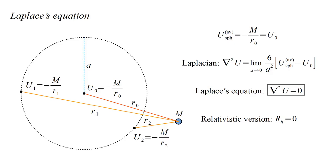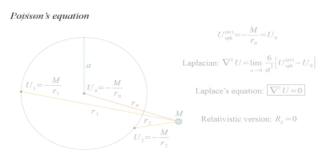In general relativity the metric tensor plays the role of gravitational potential, and the relativistic version of Laplace's equation is the Ricci flatness condition. In matter-filled space, Laplace's equation is replaced by Poisson's equation. Suppose our sphere is now filled with uniformly dense matter. Starting at the center we want to know how much work is required to move a unit mass to the surface.